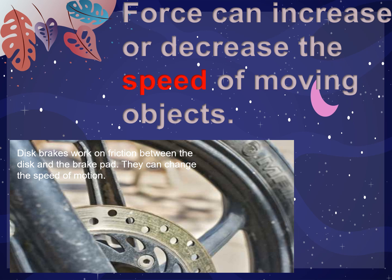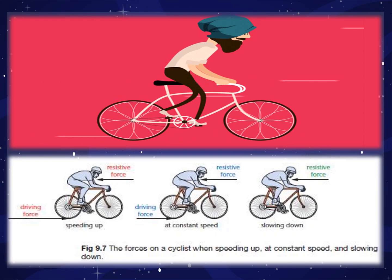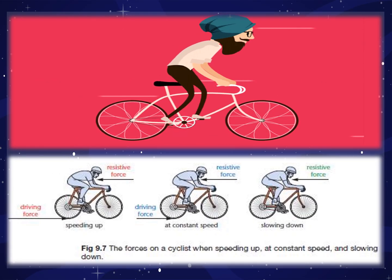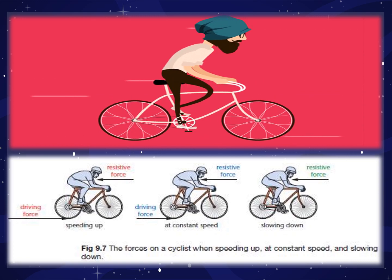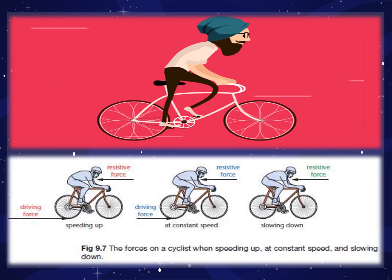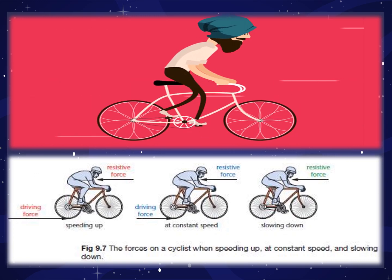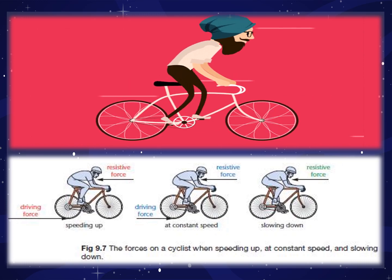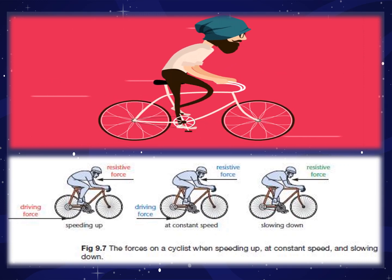Brakes applied on a vehicle work on the same principle of friction. The friction between the brake pads and the wheel reduces the speed of the wheels. A force can cause a moving object to move faster or slower while pedaling. Look at this guy pedaling a bicycle — at first they're speeding up, then there's a constant speed, and then it slows down. So it can increase, maintain, or decrease speed.